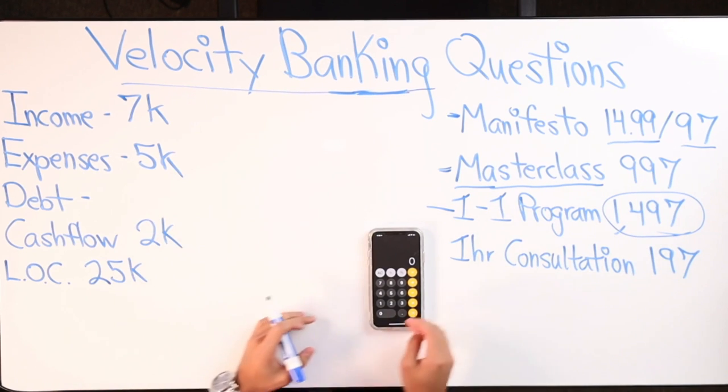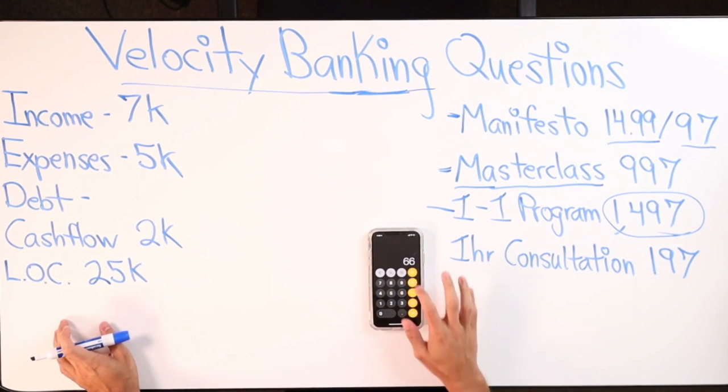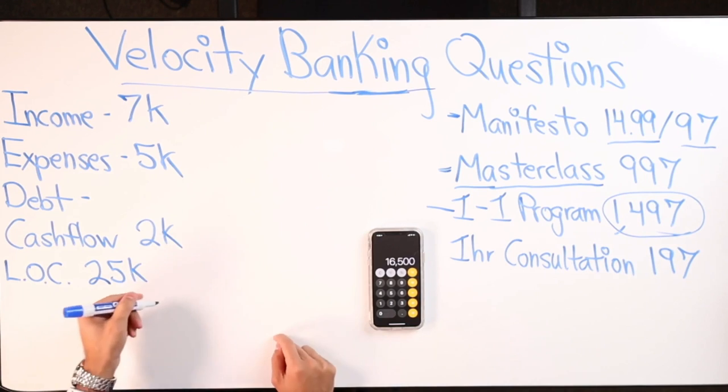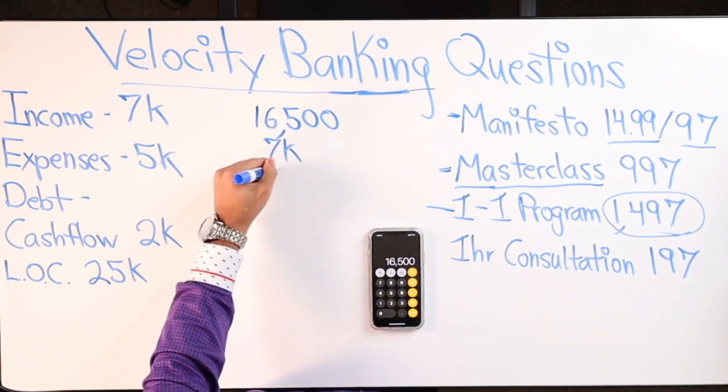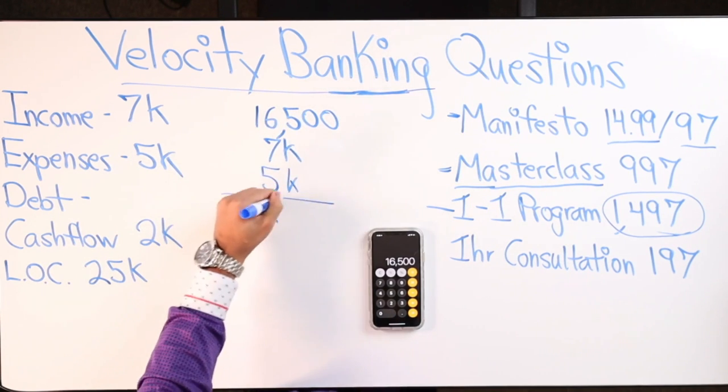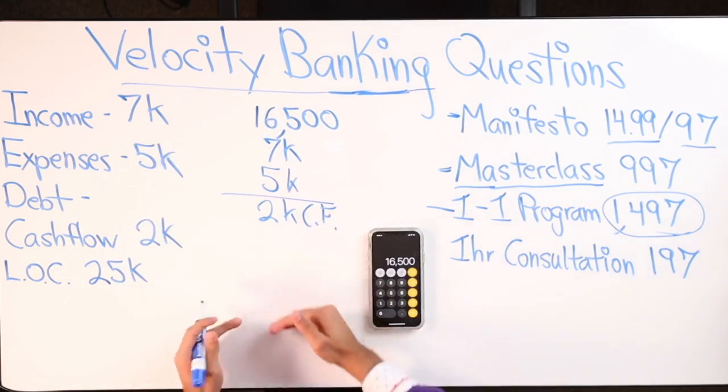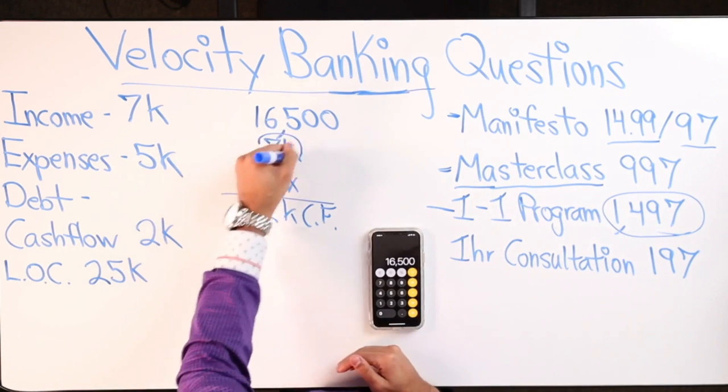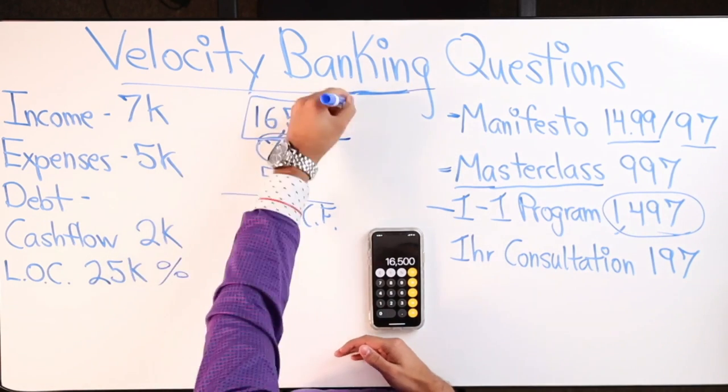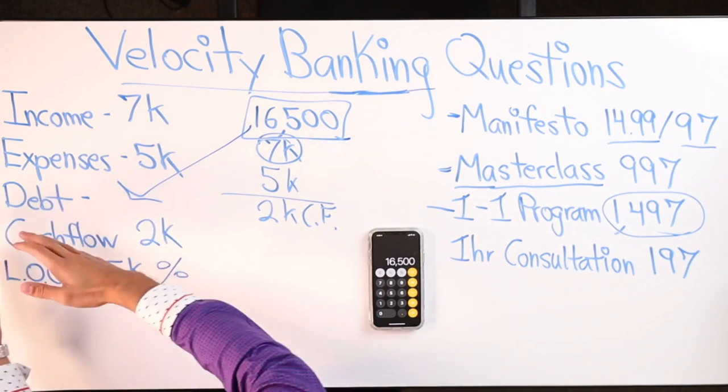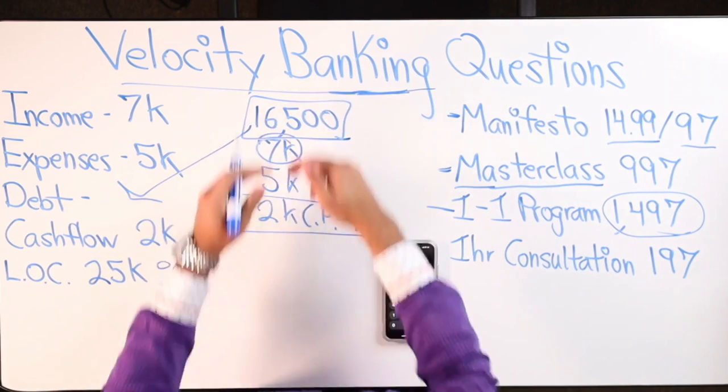What we're really discussing is what to do when the line of credit hits 5k owed on the line of credit itself. Let's say he did a 66% chunk which is 16.5, and you make 7k. So each and every month 7k is going in, 5k is coming out. 2k cash flow is what's actually bringing that 16.5 down each and every month.